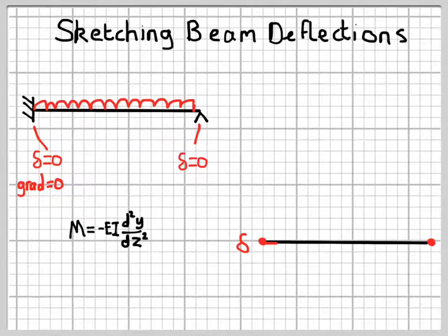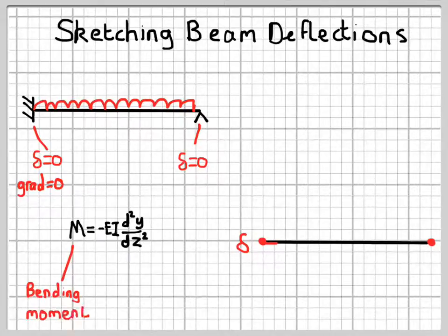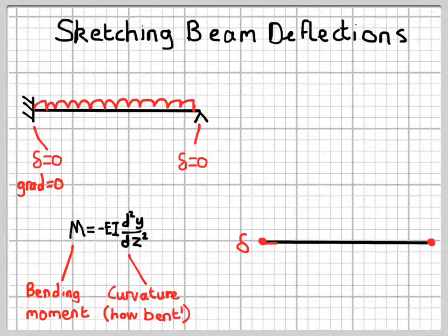The reason for this is it comes back to the moment-curvature relationship, this equation that crops up again and again in structural mechanics. It relates the bending moment in a beam to the curvature, or how bent a beam is. And with the sign convention we're using here, what it says is a positive bending moment gives rise to a curvature which has the beam concave upwards, so a sagging curvature.